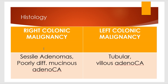The third difference is histology. Biopsy taken from right colonic malignancy usually reveals sessile adenomas, and they are poorly differentiated mucinous adenocarcinoma — poorly differentiated meaning the cell division rate is high, mucinous variety of adenocarcinoma where secretory gland epithelium is involved. Whereas in left colonic malignancy, it is usually of the tubular variety, and villous adenocarcinoma is the common finding.